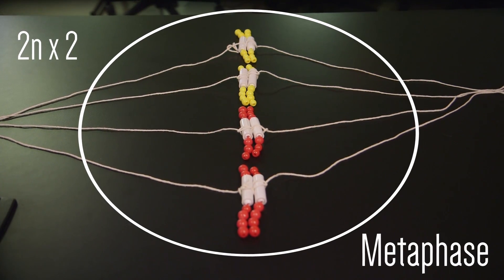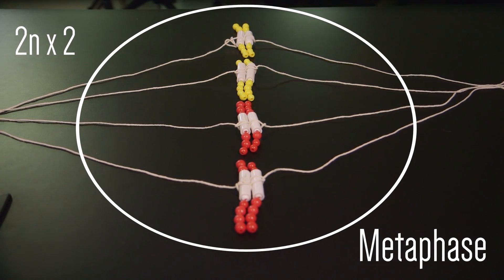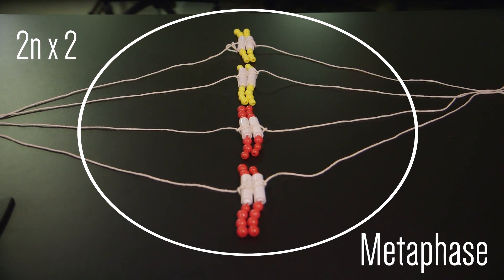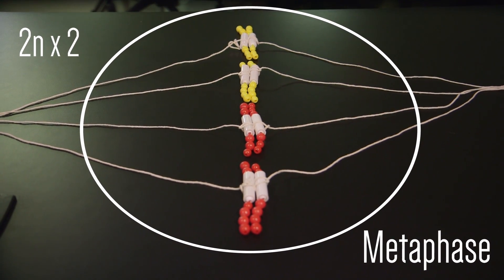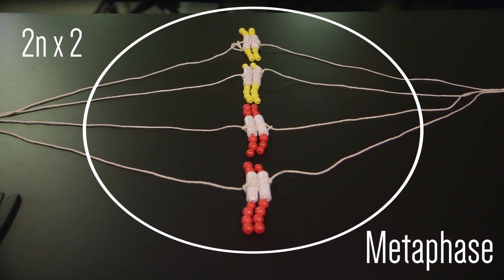Notice that the arrangement of the chromosomes is random, shown here as red, red, yellow, yellow, which could have been any sequence of colors, such as yellow, red, yellow, red. This means that the homologues do not associate with each other whatsoever. The spindle fibers will come together in one area on either side of the chromosomes, as shown.